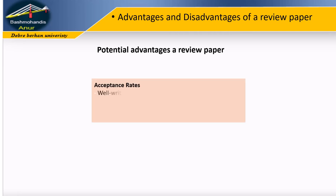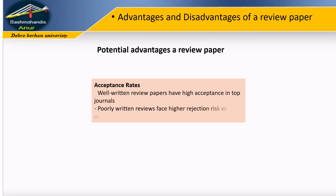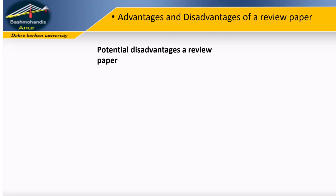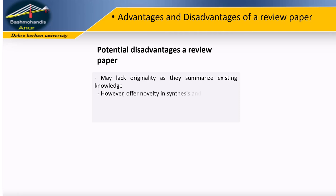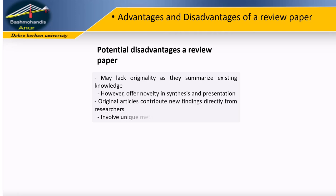If well-written, review papers have a high acceptance rate in high-impact factor journals. However, if a review paper is not written well, it has a high probability of being rejected compared to an original article. The disadvantage is that review papers might lack originality since they summarize existing knowledge, though they offer novelty in synthesizing and presenting that knowledge. Original articles, on the other hand, contribute new findings directly from the researcher, involving unique methodologies and interpretations. Both types of papers have their own importance.